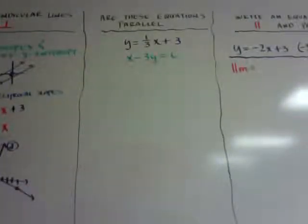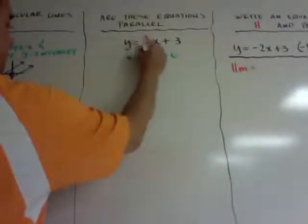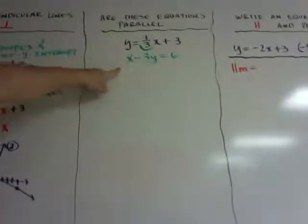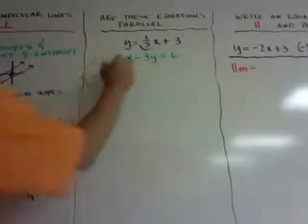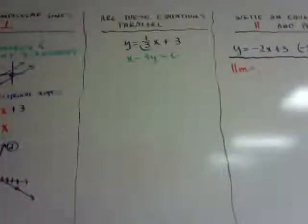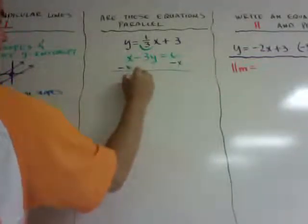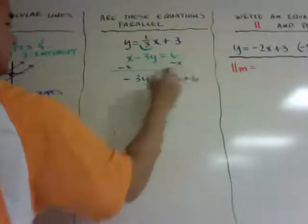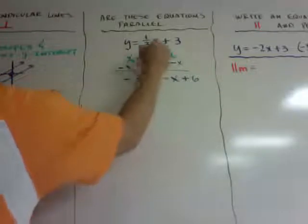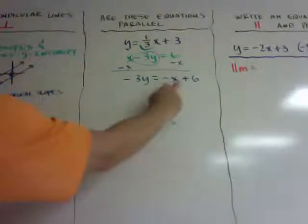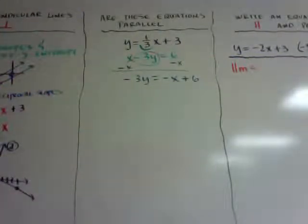Here's the first thing I want to show you. Are these equations parallel? In order to tell that, we need to have the same slopes. You can see the first equation has a slope of 1 third. But the second equation is not in slope-intercept form, so I can't tell what the slope is — I need to rearrange it. I'll subtract x from both sides, and I'll get negative 3y equals negative x plus 6. I took down the negative 3y, and I put the x in front so that it would be in y = mx + b form.